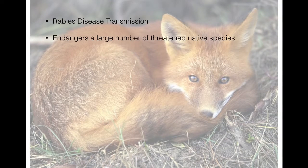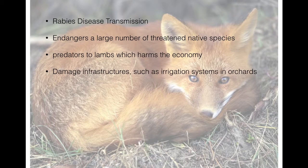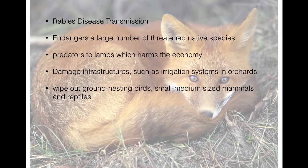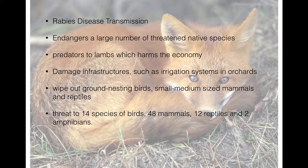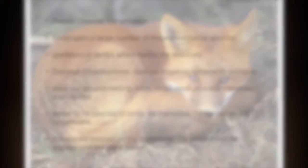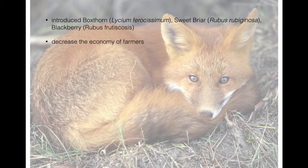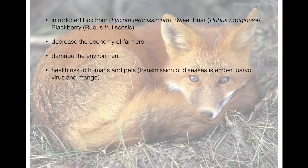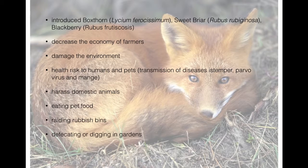The most common disease associated with red foxes is rabies, and they are also found to carry a variety of endoparasites. Predation by red foxes is a major threat to the survival of native Australian fauna, with threatened species including the bilby and the numbat. In 2004, red foxes cost Australian environmental industries more than $237 million in predation of lambs. They also chew and damage infrastructure such as irrigation systems in orchards.